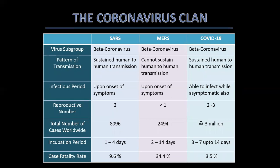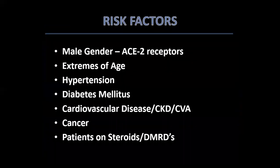A quick look at the COVID-19 virus. It belongs to the family of beta coronaviruses. There is sustained human-to-human transmission, which began only in December last year. The problem with this virus is that it has the ability to infect even while the patient is asymptomatic. Approximately 3 million people have been infected so far. The incubation period is typically three to seven days, and the case fatality rate in India is approximately 3.5%, whereas in Italy it went up to almost 13% and in the United Kingdom it's about 10%.